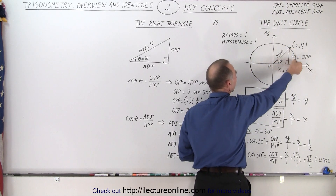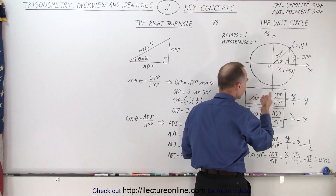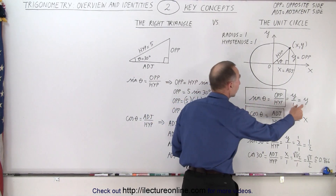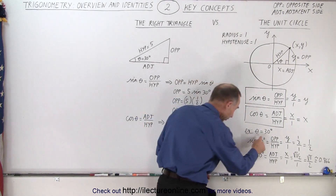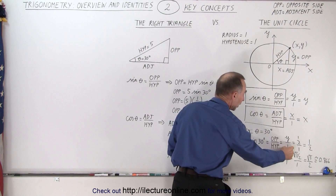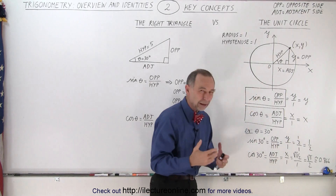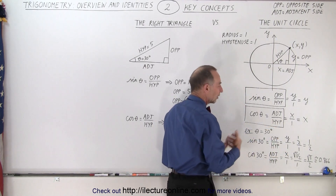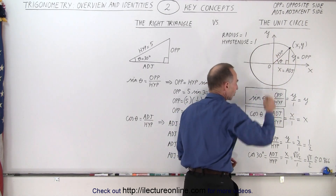If you change that point on the circle, you vary the length of y and the length of x. On the unit circle, the sine of theta equals the value for y and the cosine equals the value for x. As an example, let's say the angle is equal to 30 degrees. The sine of 30 equals the opposite side over the hypotenuse, which is y over 1. The sine of 30 is equal to one half, so if you plug 30 into a calculator and press sine, you get 0.5.